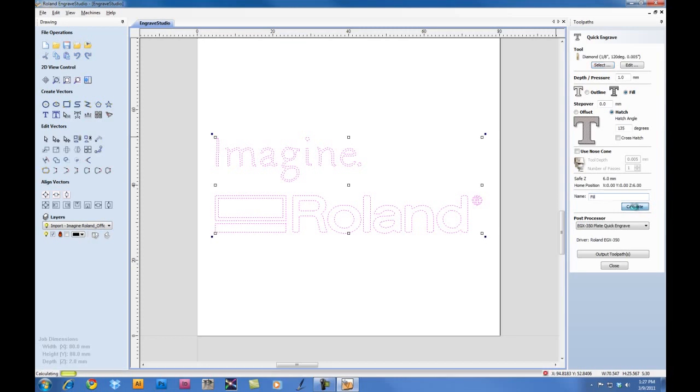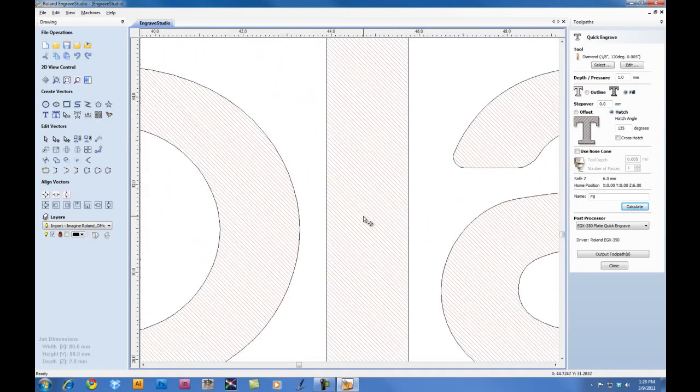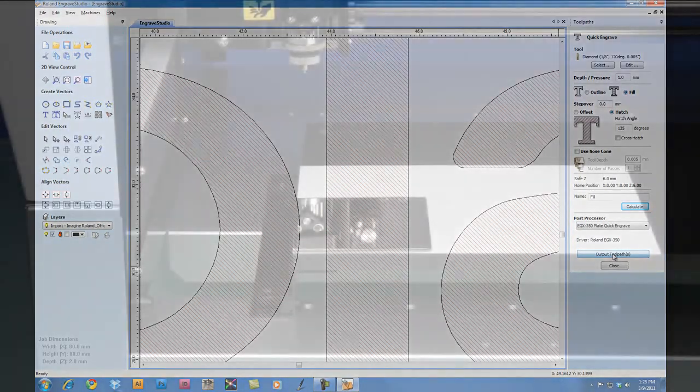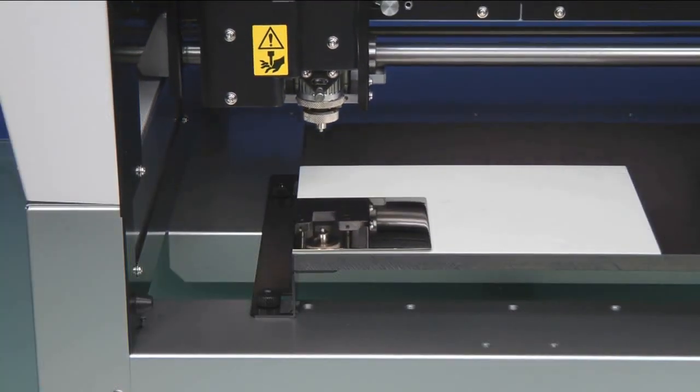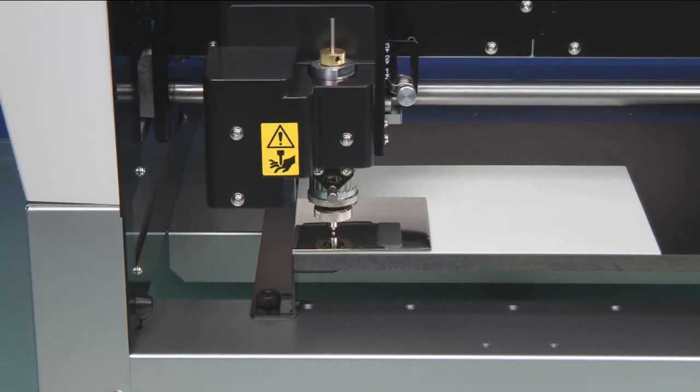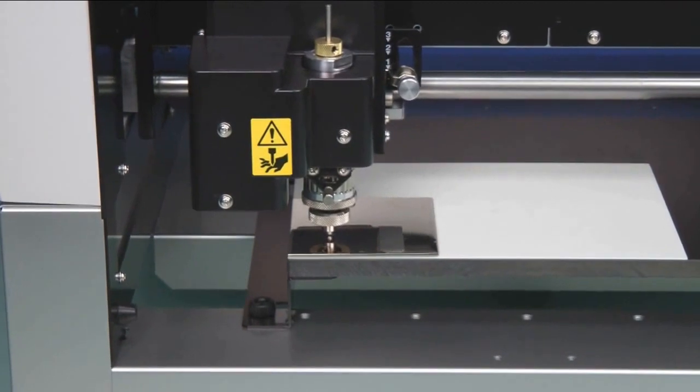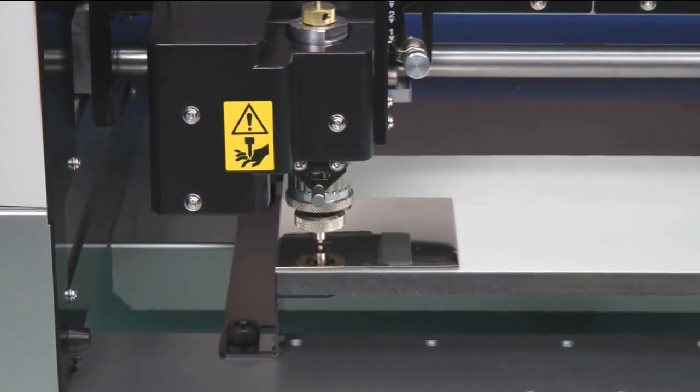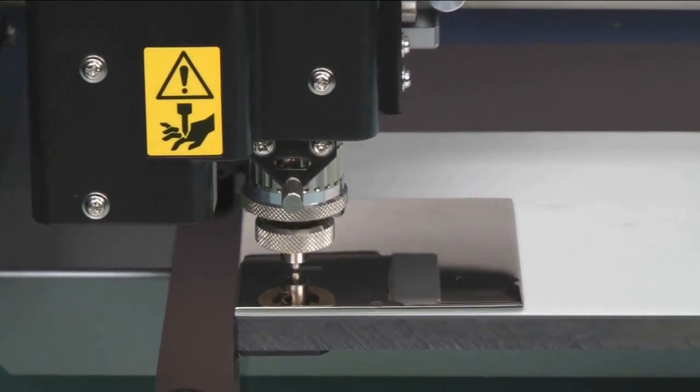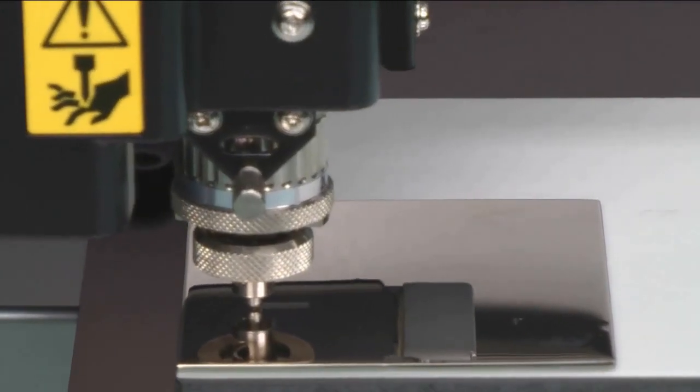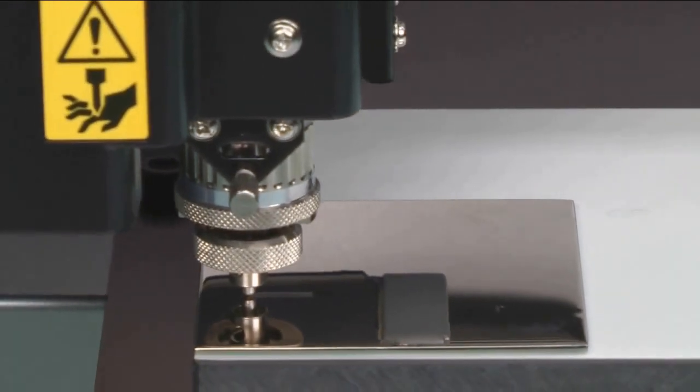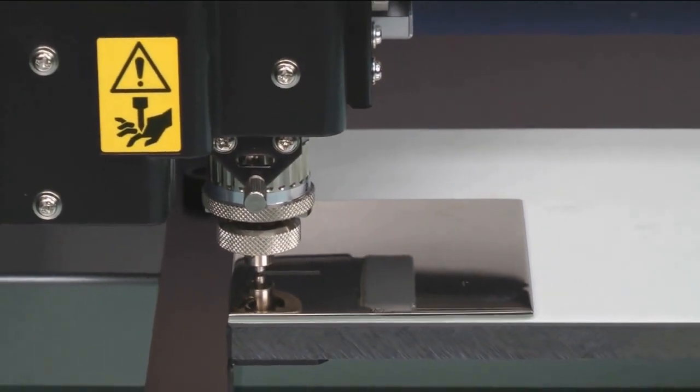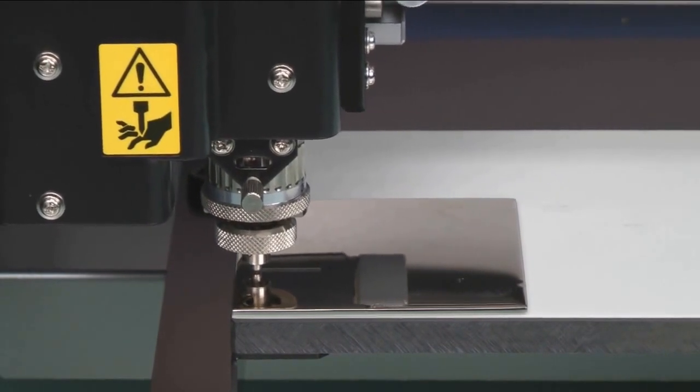Click Calculate to calculate the toolpath, and if we zoom in on it, you can actually see the toolpath itself. Once completed, we can click Output Toolpath to output the file to the engraver.